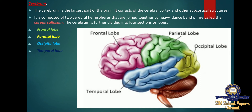The frontal lobe lies just beneath our forehead and is associated with the brain's ability to reason, plan, speak, move, make facial expressions, problem solve, control and initiate and self-regulate behaviour, pay attention, remember, and control emotions.